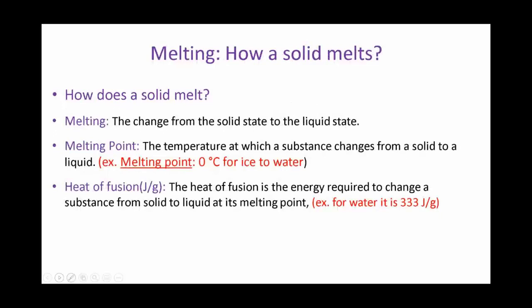Let's discuss the first change: melting. Melting is a change of solid into a liquid. For the solid to change into liquid, there are two conditions you have to fulfill. Number one: you have to raise the temperature of the solid to reach the melting temperature, which we call the melting point. For the metals or crystalline solids, there is a certain temperature at which they melt down.